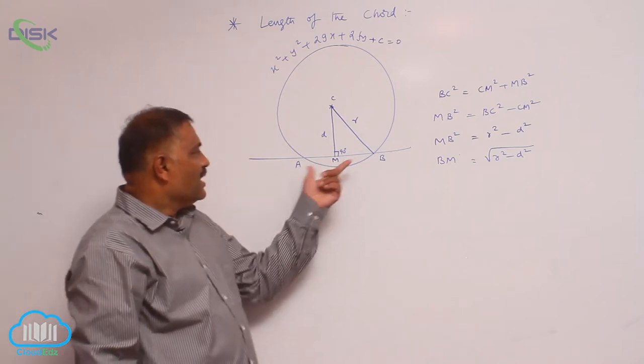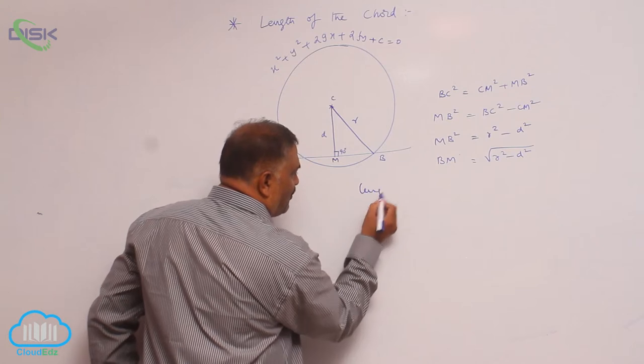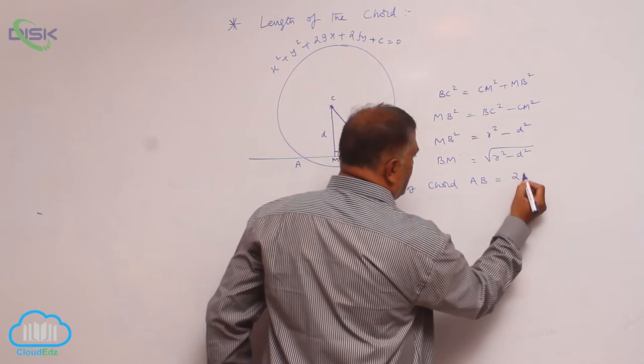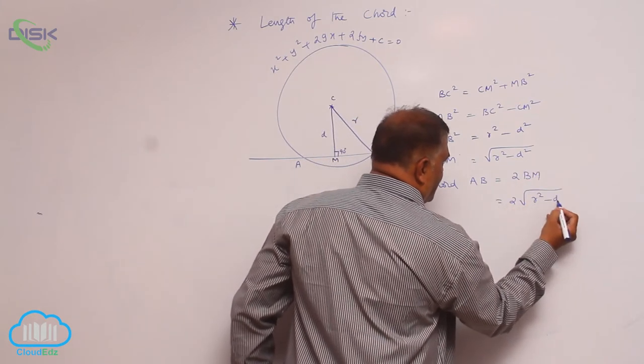But length of the chord is given by AB. Length of chord is equal to AB, that is equal to 2 times BM, that is 2 times square root of r square minus d square.